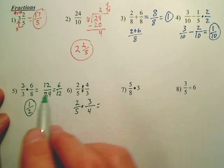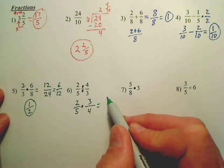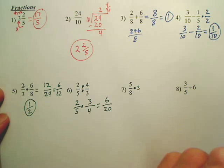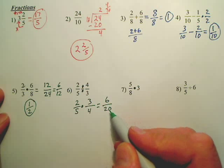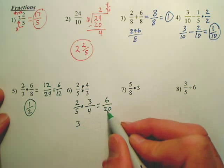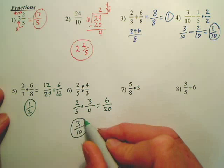And then you multiply just like here, straight across. So 2 times 3 is 6. 5 times 4 is 20. Are we reduced? No. What goes into 6 and 20? 2. 2 goes into 6? 3. 2 goes into 20? That one is all we can do.